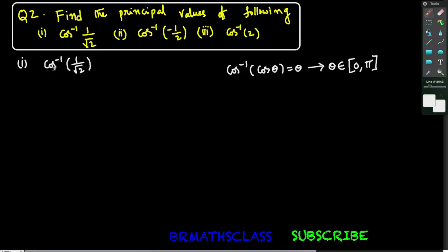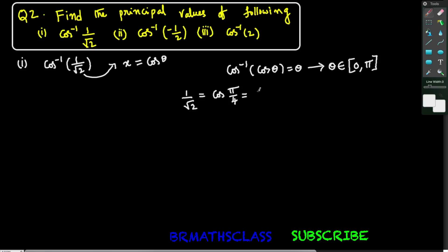This problem is of the form cos inverse x. I want to write x in the form of cos theta so that I can use the formula cos inverse of cos theta. From the trigonometry table, you know that 1 by root 2 can be written as cos pi by 4. We can also write 1 by root 2 as cos 7 pi by 4, so we can get some more theta values here.